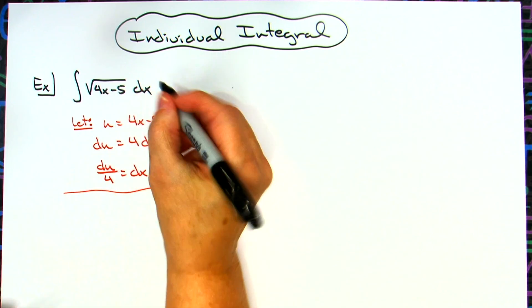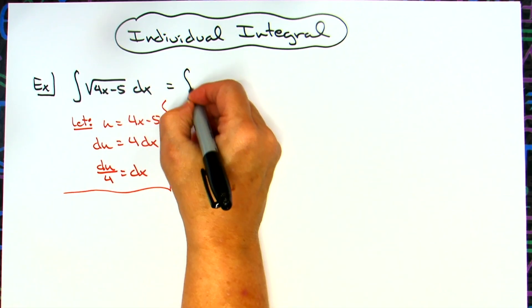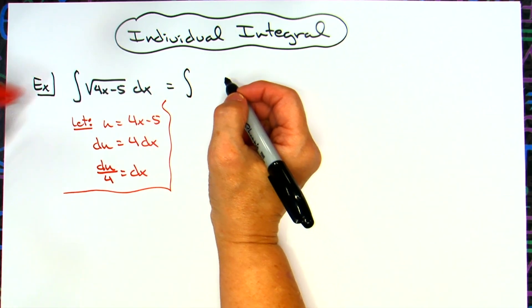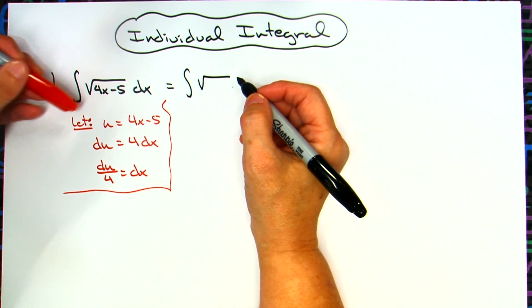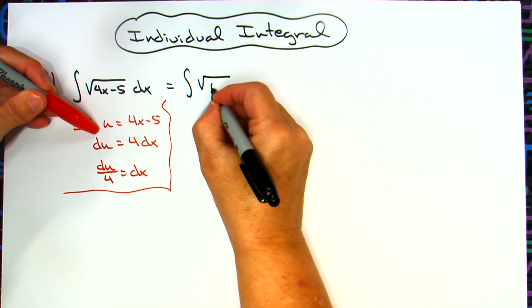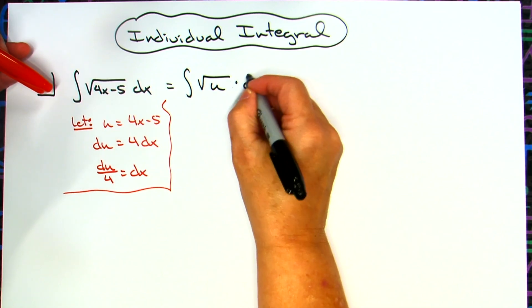Now, after we get that done, then we're going to come back up here to our original integral and we're going to start making some substitutions. We'll still have the square root sign. We're going to replace the 4x minus 5 with a u, and then we'll still have the dx right there.